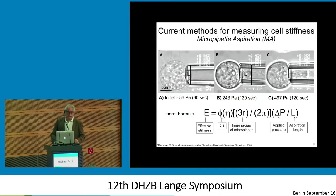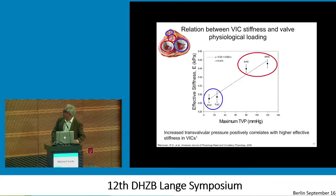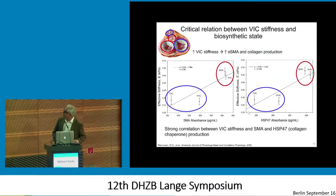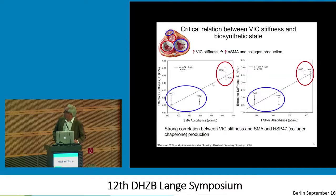A few years ago we did some studies on the mechanical properties of the cells — we were actually the first ones to do this. We used a technique called micropipette aspiration. It's a classic technique really designed for circulating cells, not interstitial cells. Interestingly, when we look at the properties of cells from all four valves, the left-side valves — the mitral and aortic — are about twice as stiff as the right-side valves. We then looked at the amount of smooth muscle actin and HSP-47, which is a collagen chaperone gene indicating the amount of collagen being produced. Cells that are stiffer exhibit more SMA and also produce more collagen — so essentially the left-side valves are much more highly synthetic than the right-side valves.